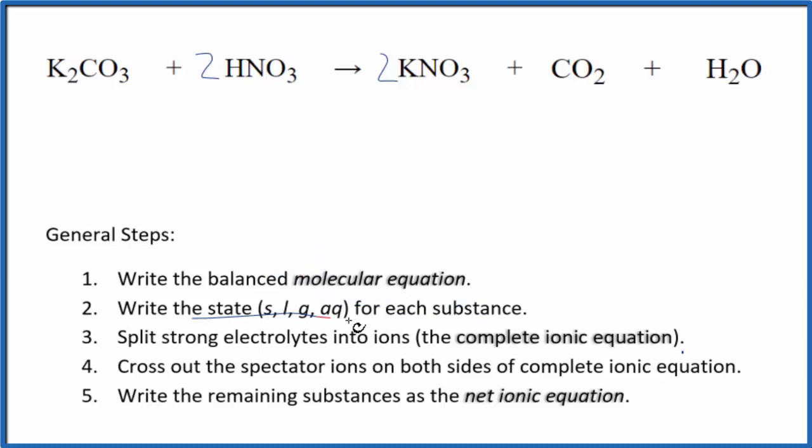Now we need to write the state for each substance. Compounds with potassium are soluble, usually strong electrolytes. Nitric acid is a strong acid, a strong electrolyte. Potassium nitrate, both potassium and nitrate, when you see those you're thinking it's going to be soluble. Carbon dioxide is a gas and water is a liquid. So we have the states.